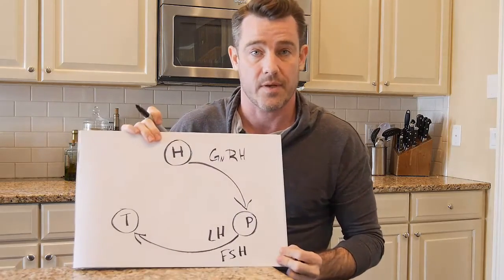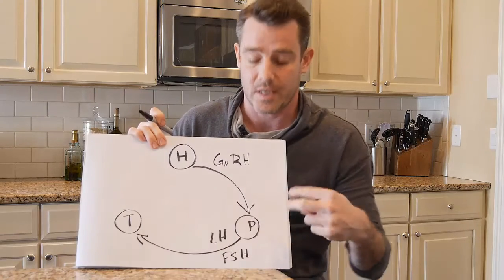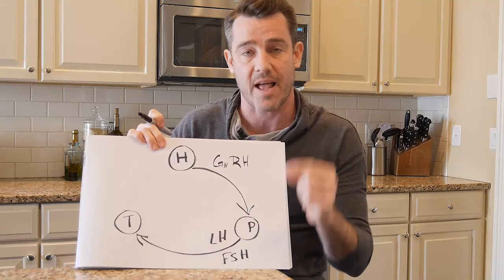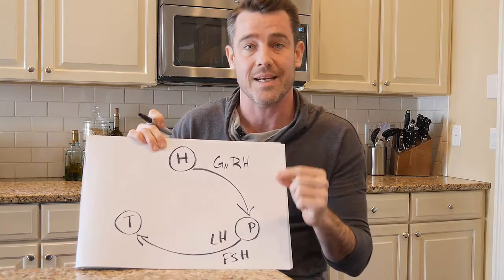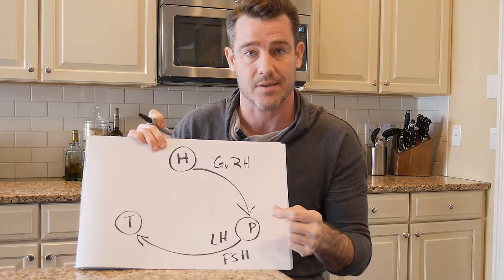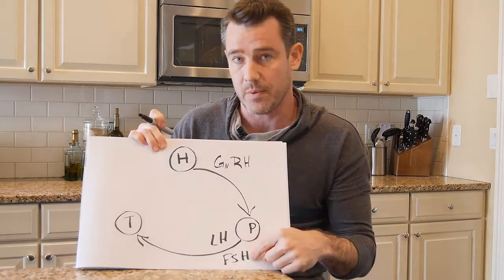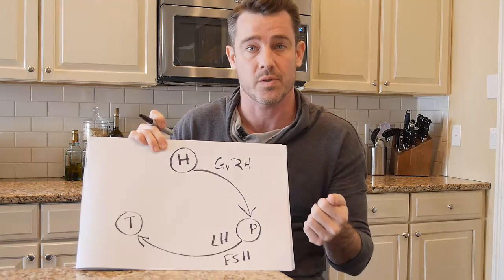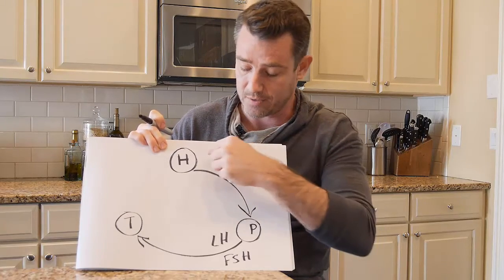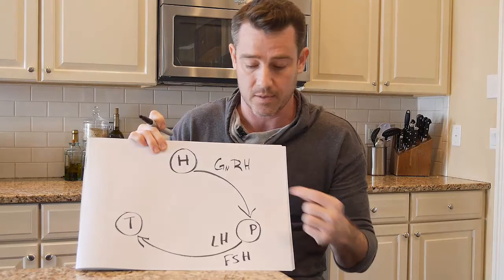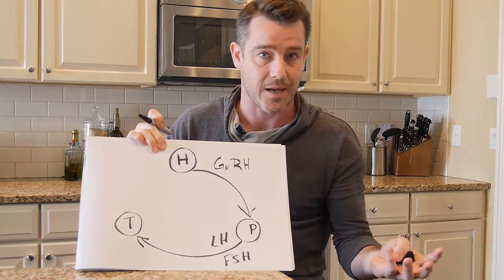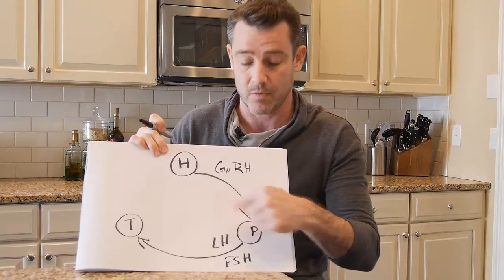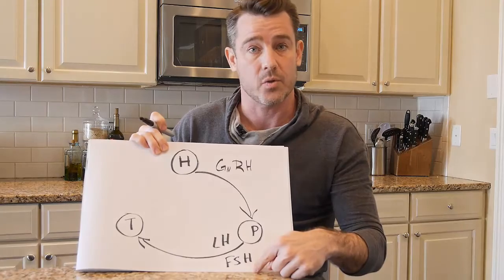LH and FSH are essential — testicular function is predicated on these two being present. Luteinizing hormone is the signaling hormone for the Leydig cells in the testicles to produce testosterone. Follicle stimulating hormone is the actuator for the Sertoli cells in the testicles to produce sperm. So if a guy has low gonadotropin releasing hormone, he's going to have low LH and FSH, and therefore testicular function for both testosterone and sperm will be low.